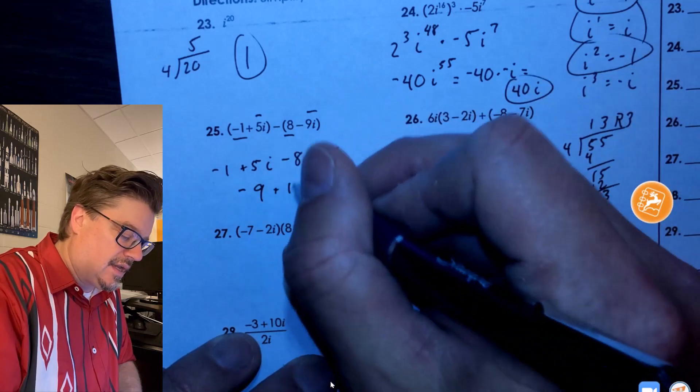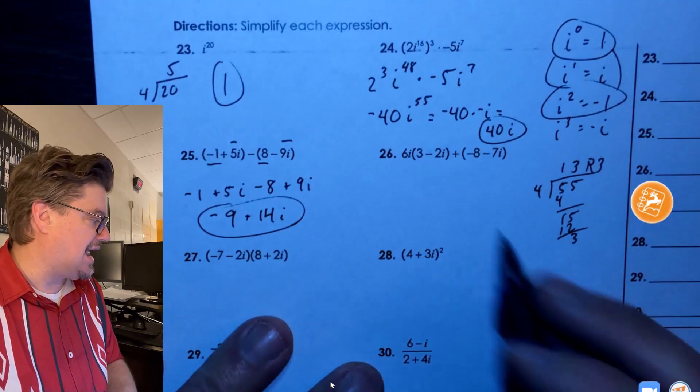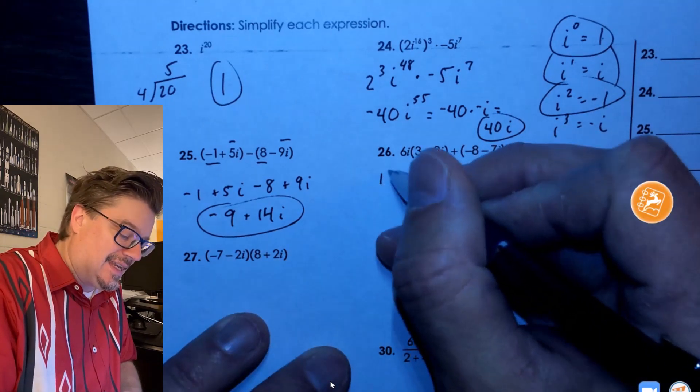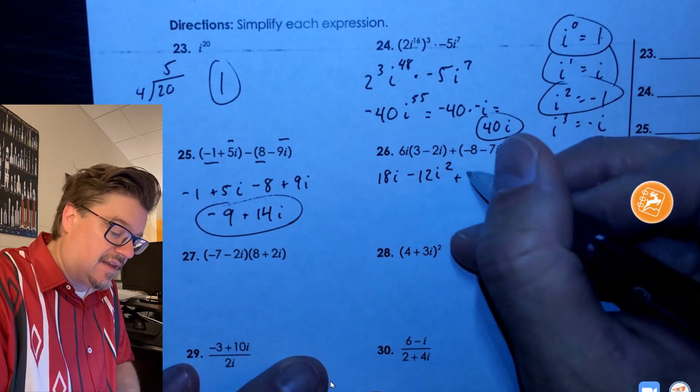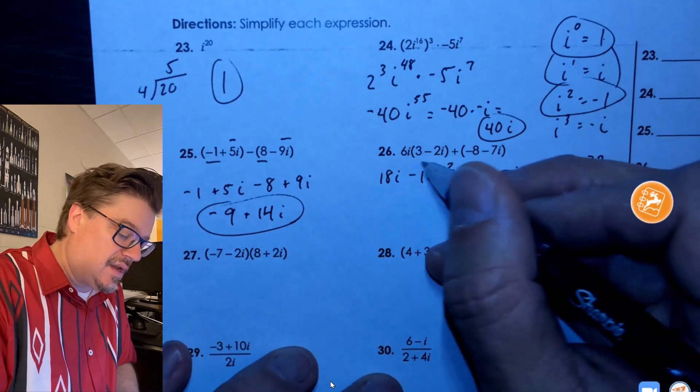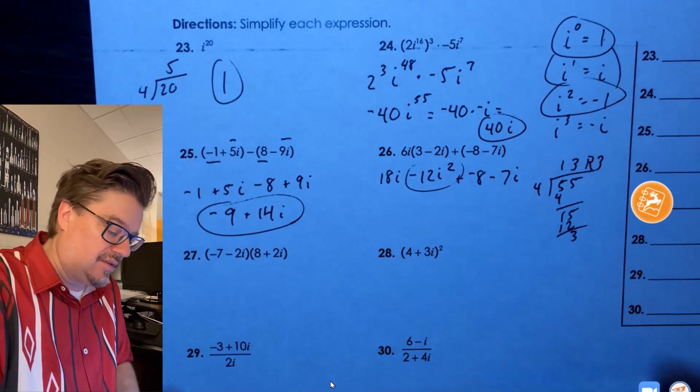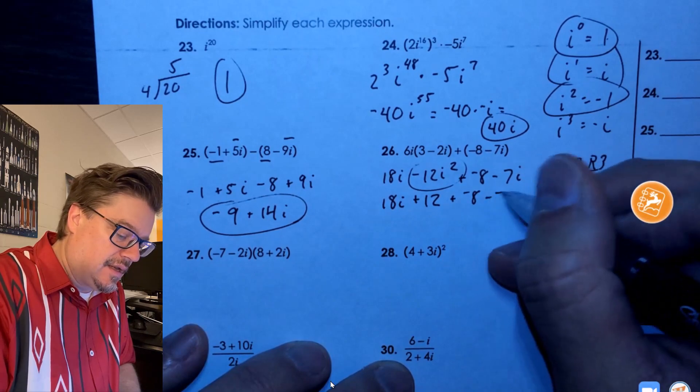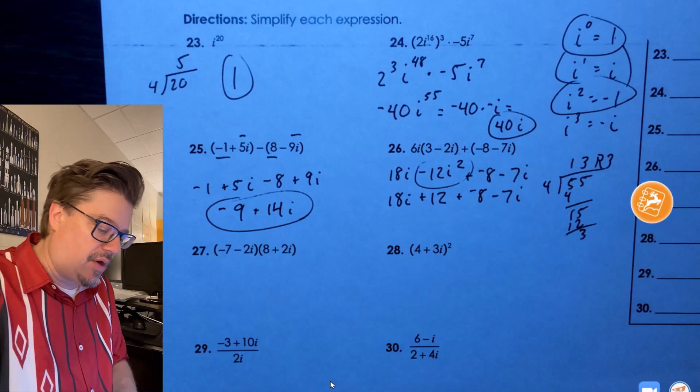Same process here, except we've got an extra addition here of distribution. So that would be 18i minus 12i squared. Don't forget to square it. Then plus negative 8 minus 7i. So these guys are all ready to add except this one - we're going to go ahead and change the sign to negative 12 to a positive 12. So 18i plus 12 minus 8. We will usually put the real part first and then the imaginary part. So that would be positive 4 and then this would be a positive 11i. That's the final answer.